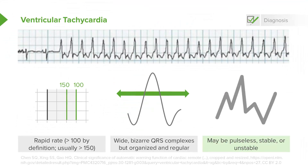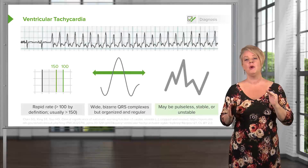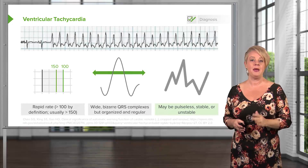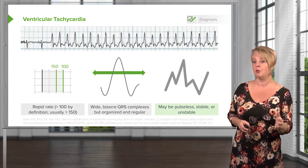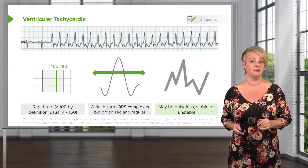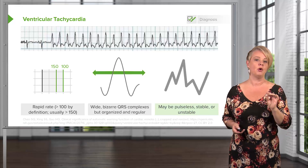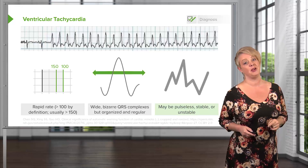Patients in V-tach can be completely pulseless, apneic, and dead, or they can be completely stable and in some cases asymptomatic, or anywhere in between. When we talk about V-tach in the context of cardiac arrest, we're talking specifically about pulseless V-tach. We don't want to treat V-tach in a patient with a pulse — especially a stable patient — the same way as in a pulseless patient. Clearly, a stable conscious patient is going to hate it if we start CPR on them.